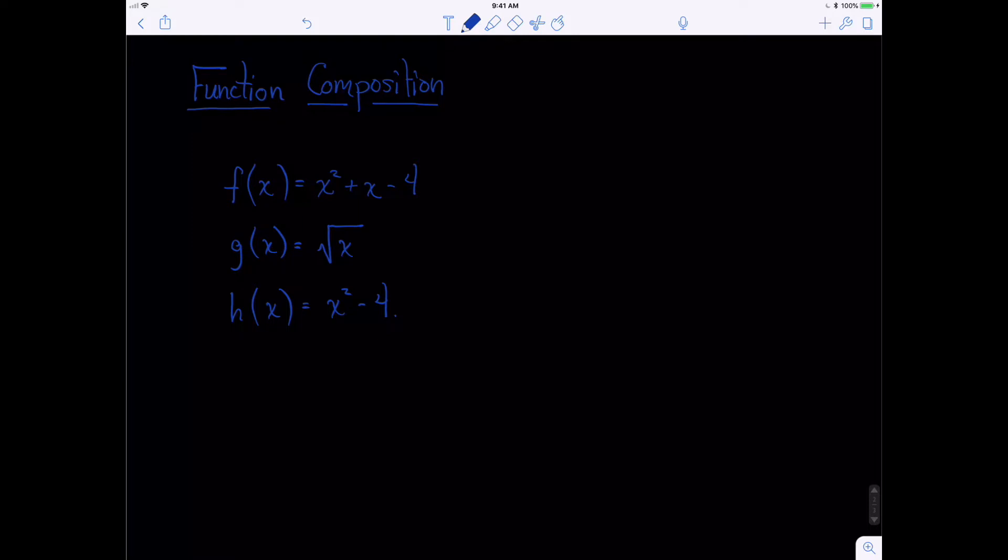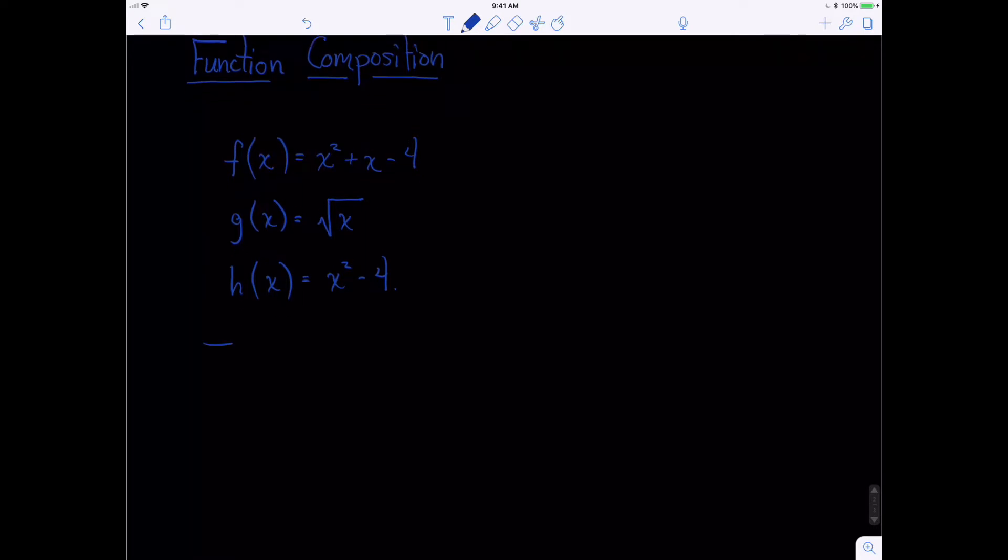And now what we're going to try is what happens when you compose the functions. So let me show you an example. For example, let's find g of h of x. What this says is that you're going to put all of h, all of this piece here, the x squared minus 4, all of that replaces the x in the g.